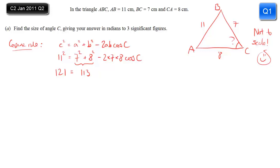11² is 121, 7² plus 8² is 113, 2 times 7 times 8 is 112, so we have this simplified line. Now I can isolate cos of C. I want that to be positive to make my life easier, so I'll add 112 cos C to both sides.